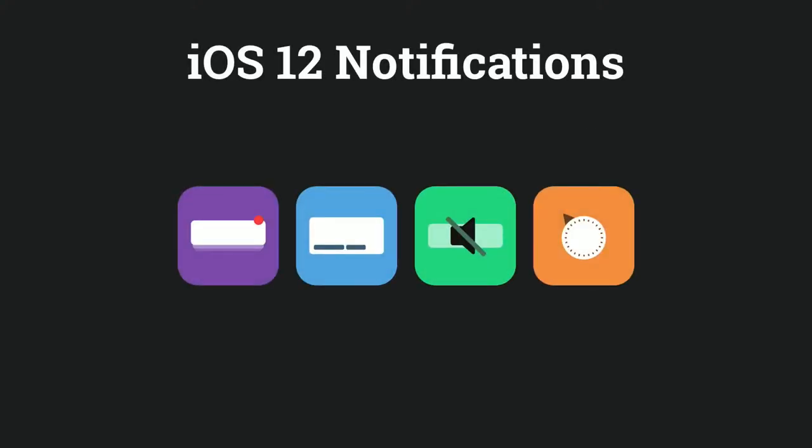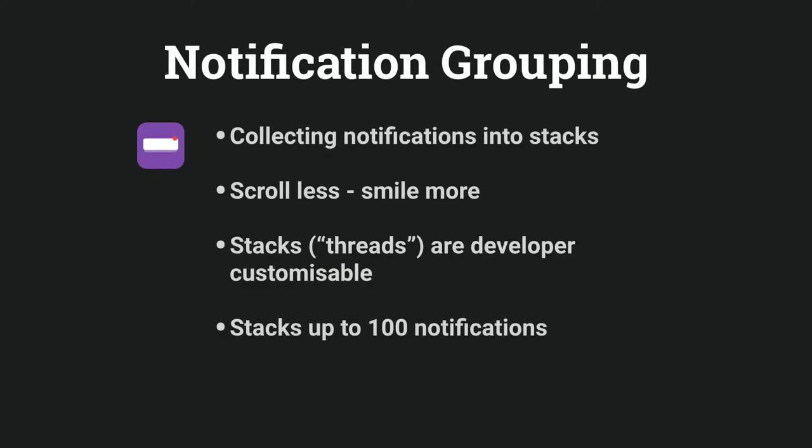Let's get cracking with an overview of what iOS 12 is bringing to the table in terms of notification improvements. The first is group notifications — probably one of the nicest changes on the horizon. By default, all notifications in the notification center will be grouped by app, so instead of taking up a huge amount of vertical space, notifications will be constrained to their own stack, expandable by a simple tap. As developers, we also have the ability to create multiple distinct notification stacks or threads, allowing diverse content from the same app to be categorized. A great example is a messaging app splitting up notifications from different chats.